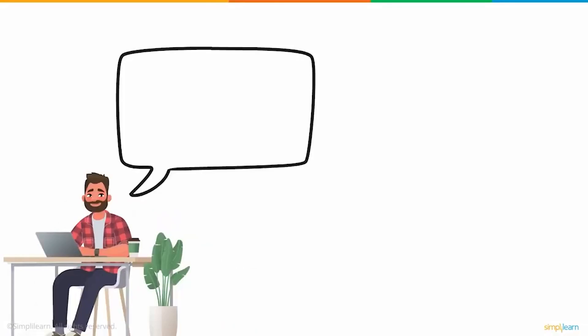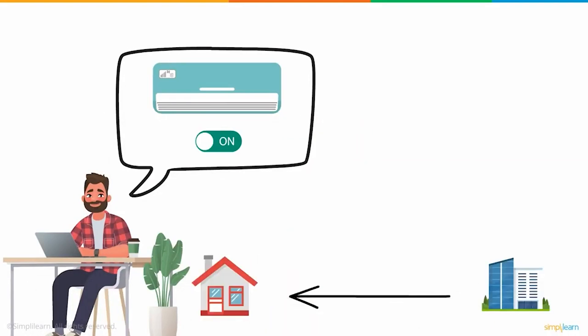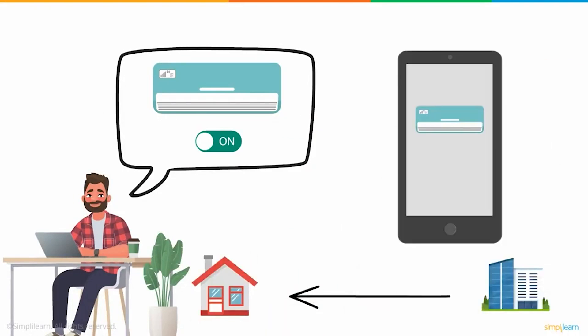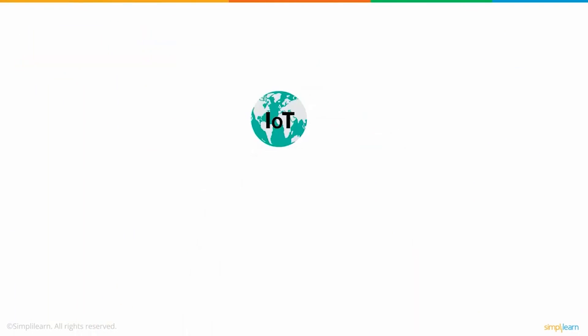Imagine you're at work and realize that you might not have turned off the air conditioner while leaving your house. Instead of traveling all the way back home, what if you could use your smartphone to know the status of your AC and perhaps even turn it off? Wouldn't that be amazing? Well, yes — and this can be achieved with the help of the Internet of Things.